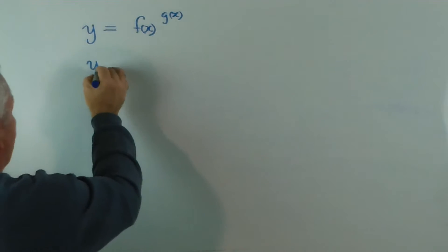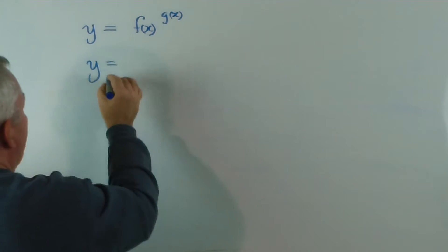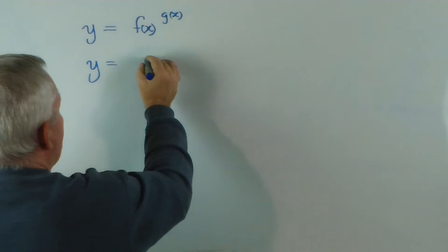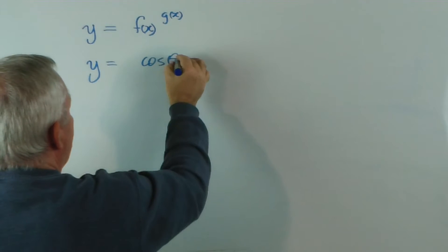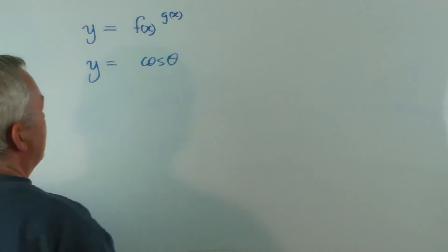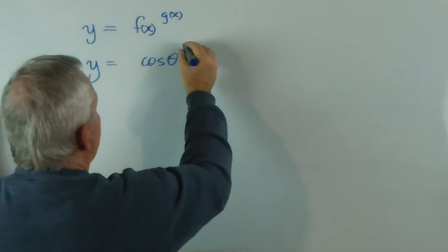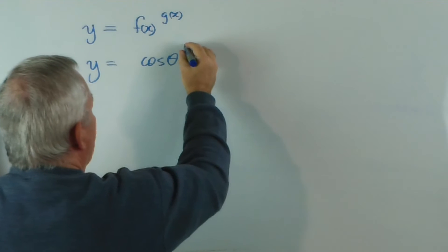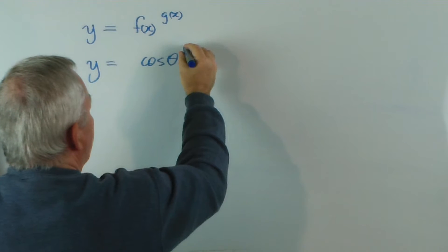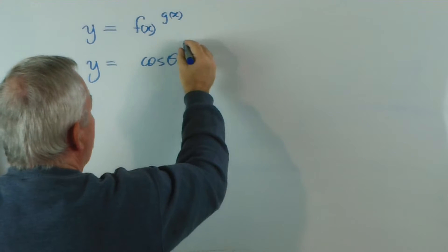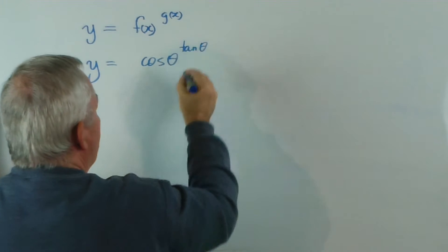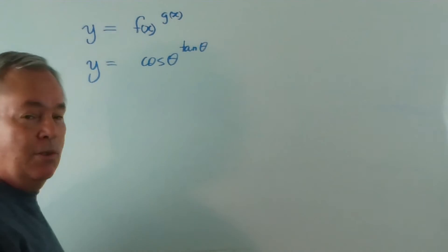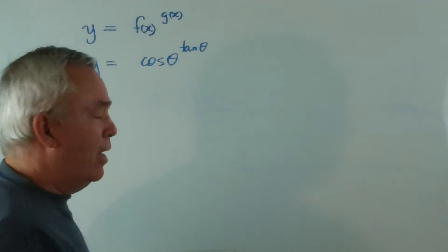Let's choose an example. Let's imagine we have the cosine of θ to the power tan θ. Let's do a trig function to a power of a trig function.